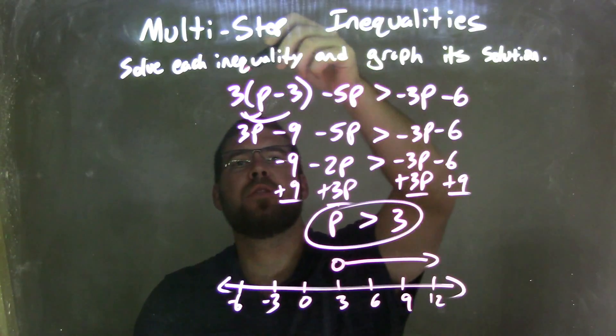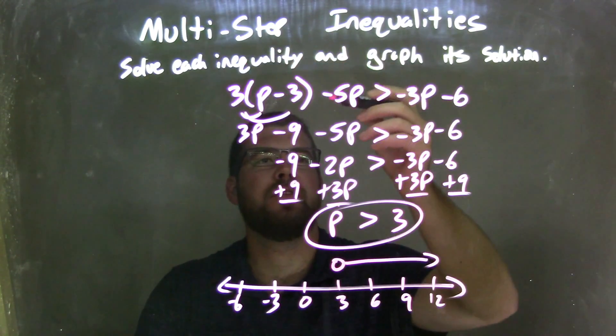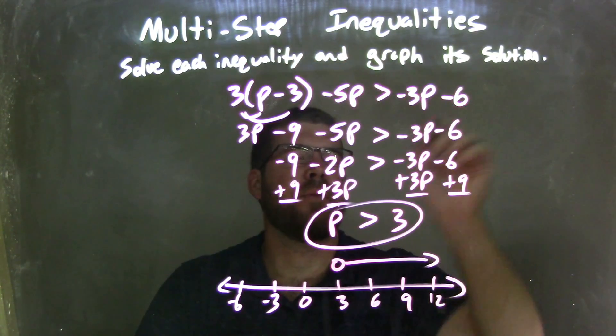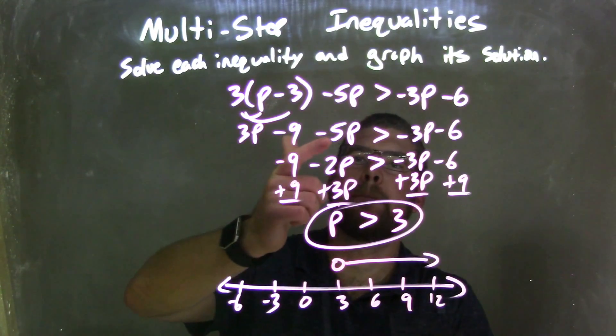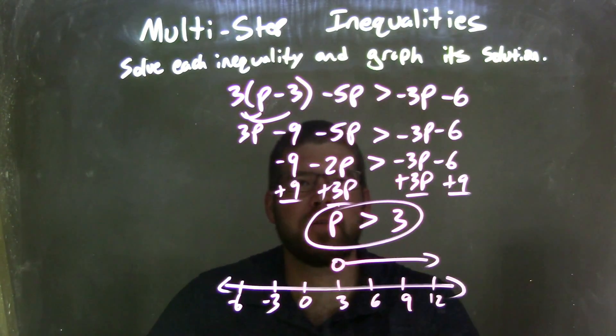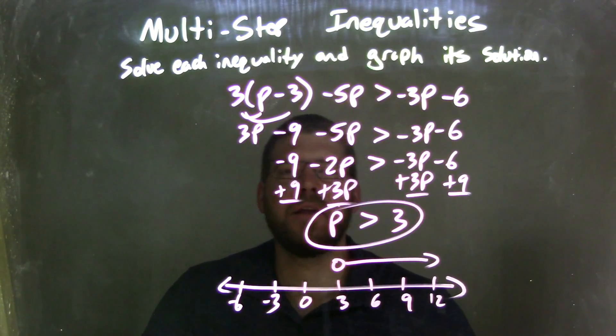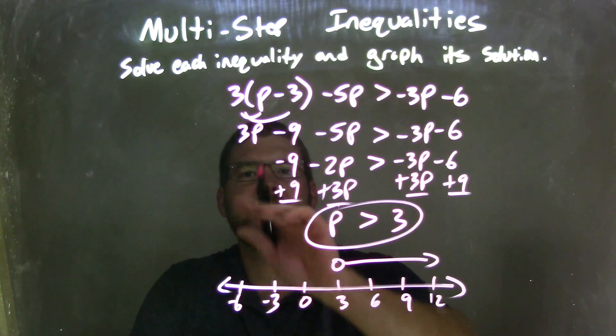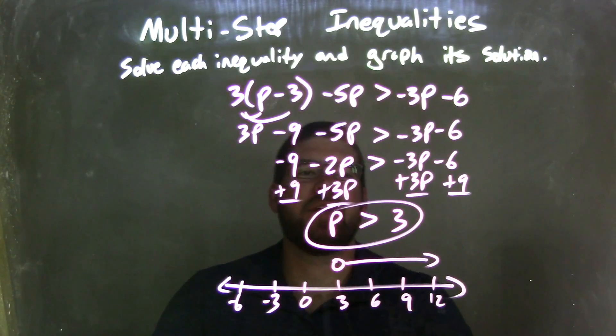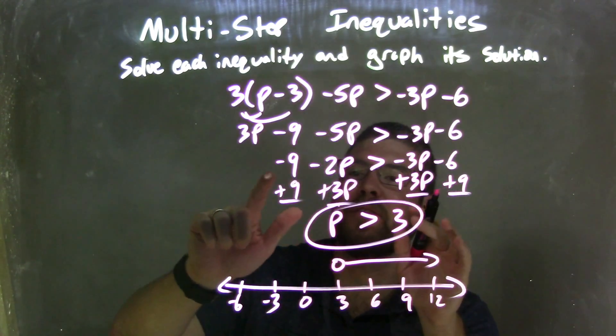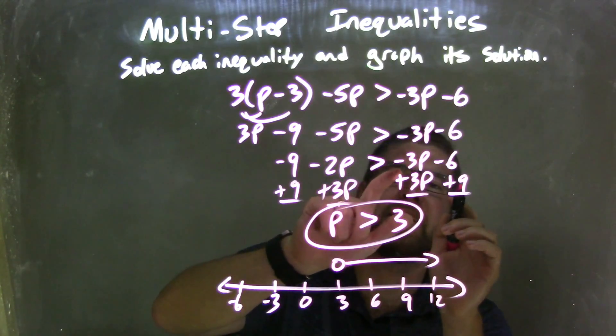So let's recap. We're given 3 times (p minus 3) in parentheses minus 5p is greater than negative 3p minus 6. I distributed the 3 across here, giving me 3p minus 9 minus 5p is greater than negative 3p minus 6. I then need to combine my like terms on each side. So 3p minus 5p is negative 2p, so negative 9 minus 2p is greater than negative 3p minus 6.